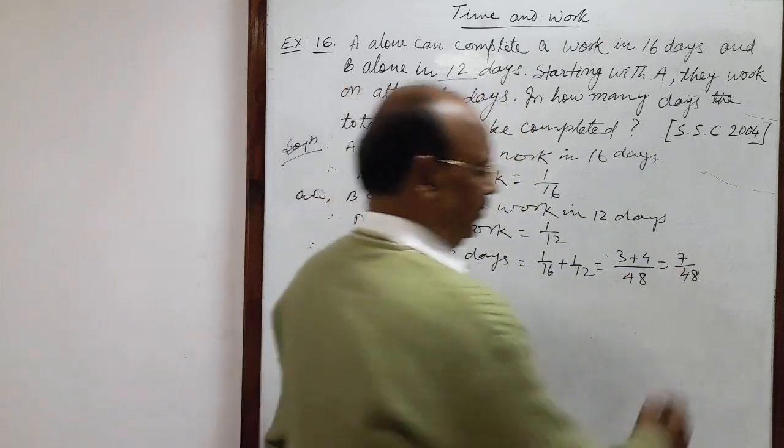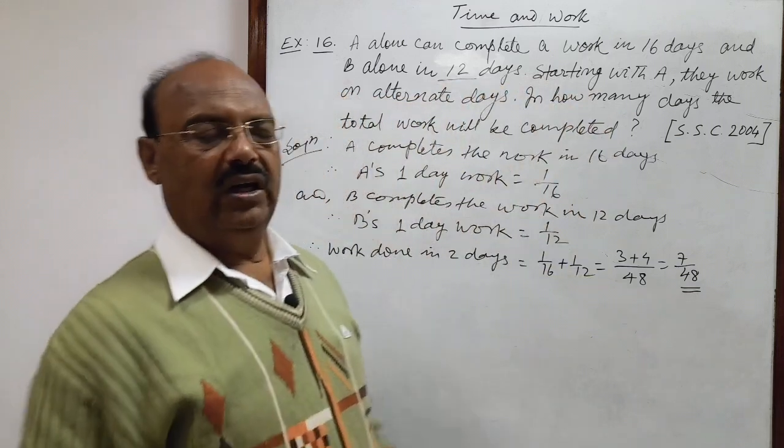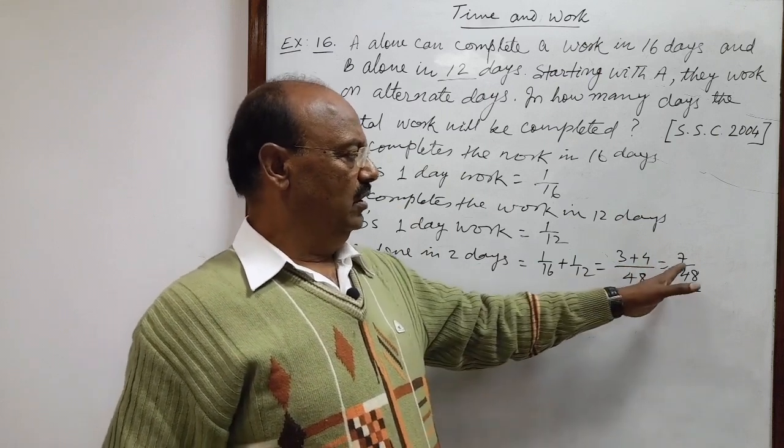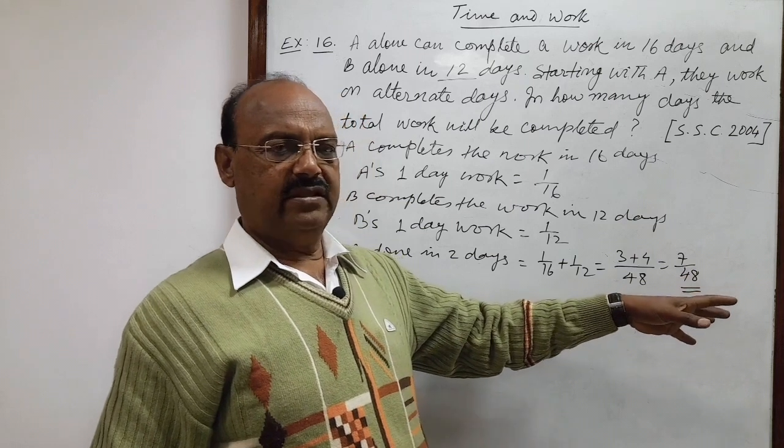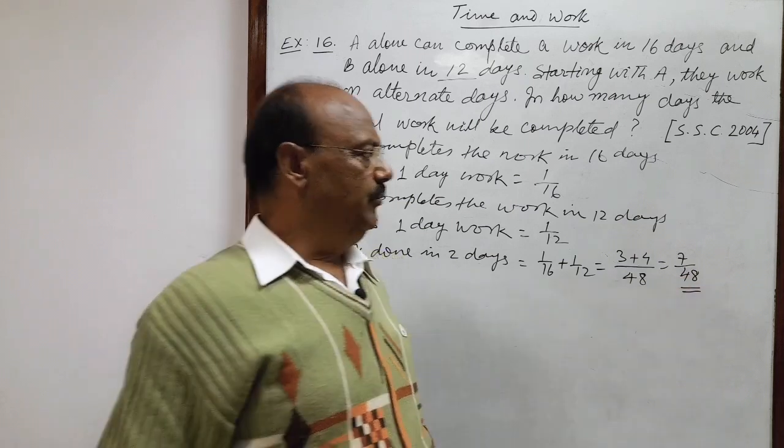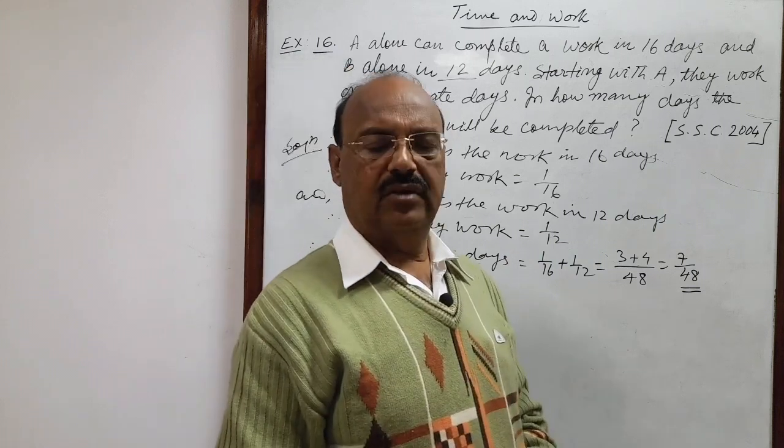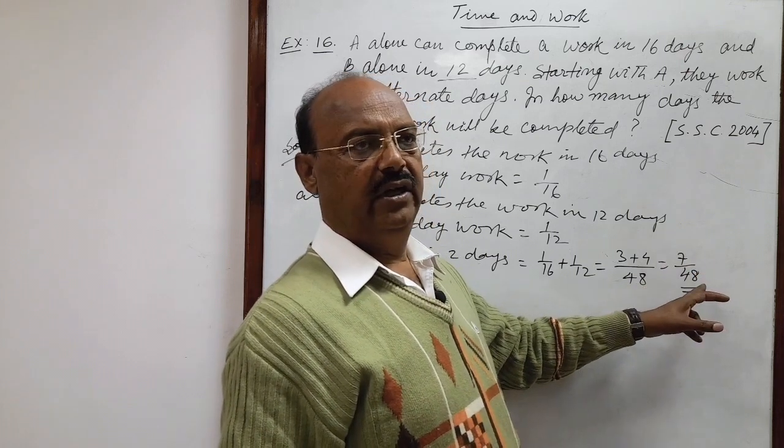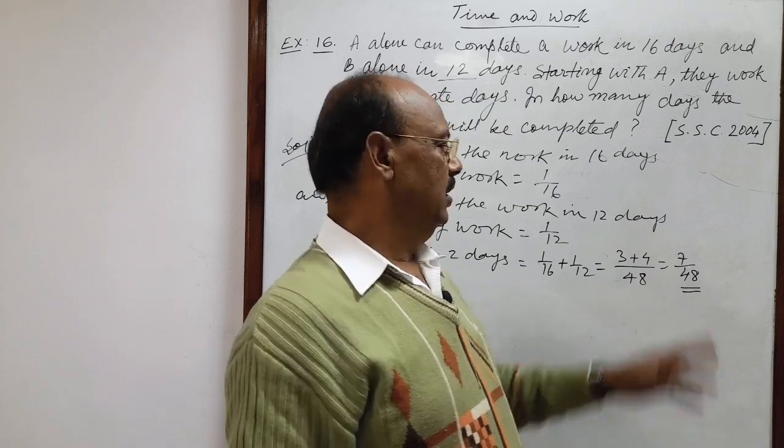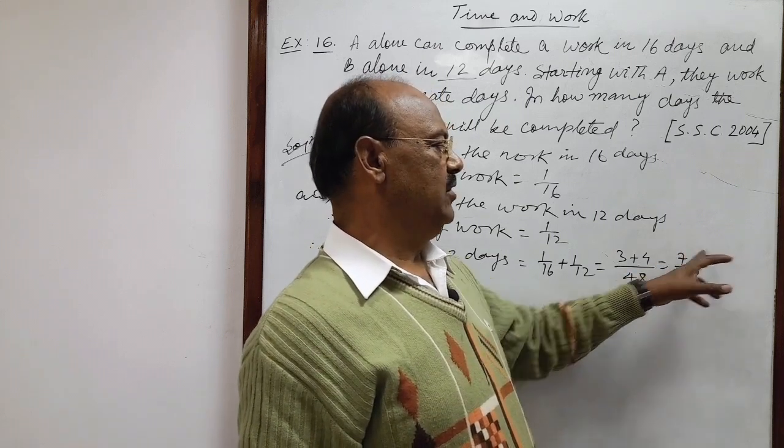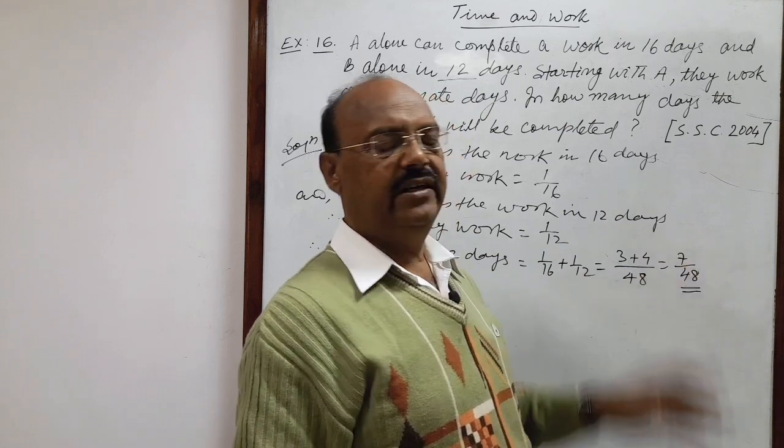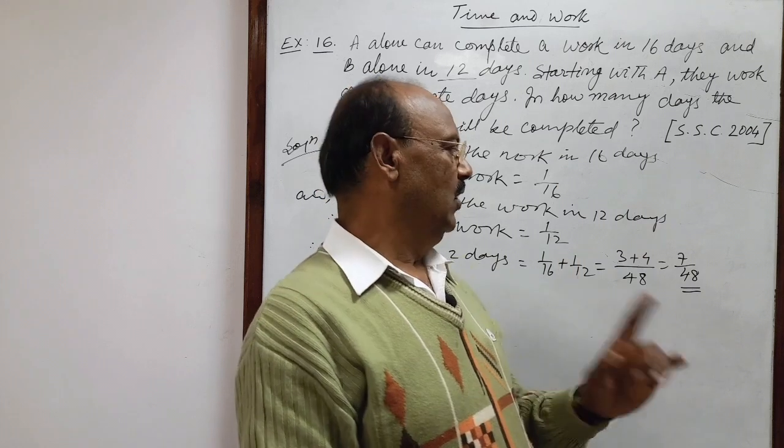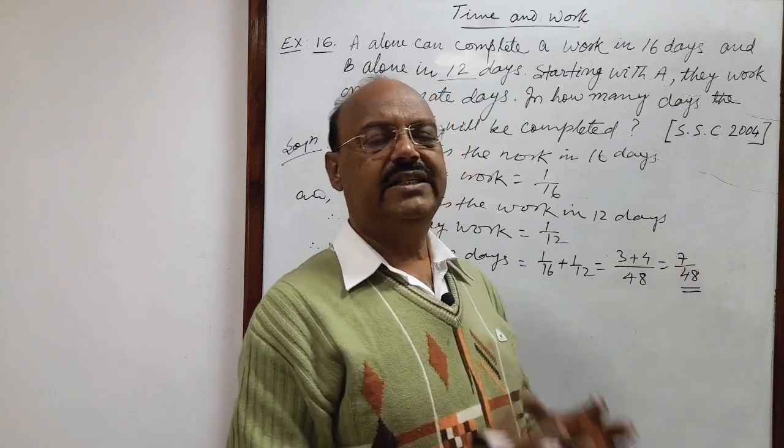You see this amount of work done. The entire work is equal to 1. In how many days will this work done be maximum but less than 1? If you take 6 pairs of days, then 7/48 into 6, 42/48, that is less than 1. But if you take 7 pairs of days, then 7/48 into 7 means 49/48, and 49/48 is greater than 1. Work will not be greater than 1. One complete work is equal to 1. So we will consider amount of work done in 6 pairs of days.